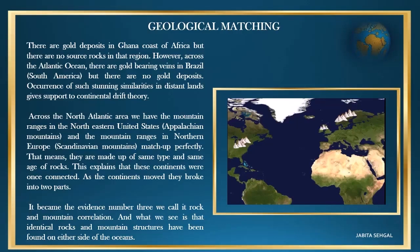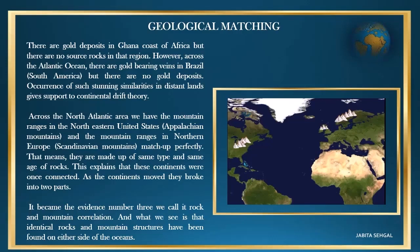As the continents moved, they broke into two parts, and this became evidence number three, which we call rock and mountain correlation. Identical rocks and mountain structures have been found on either side of the ocean.